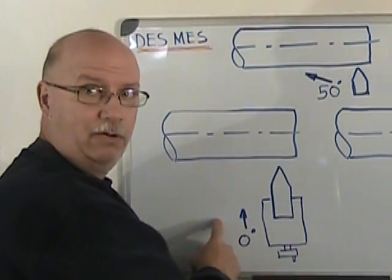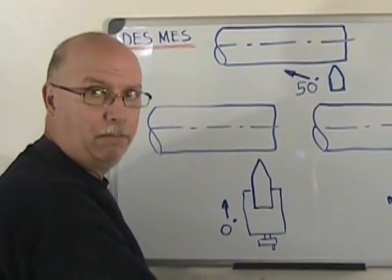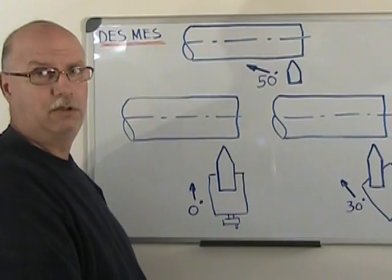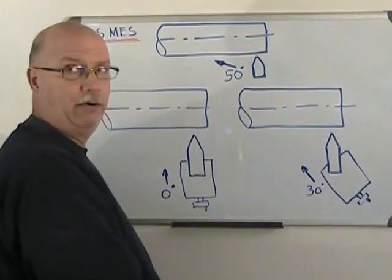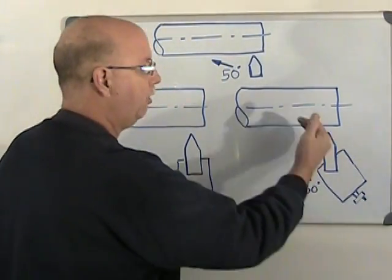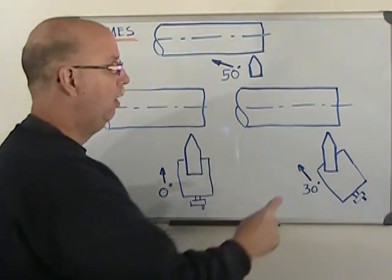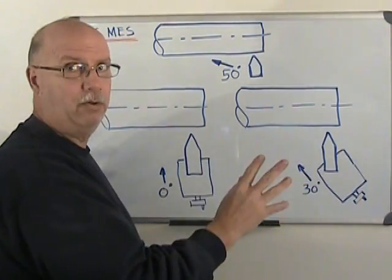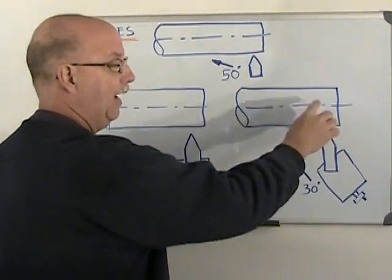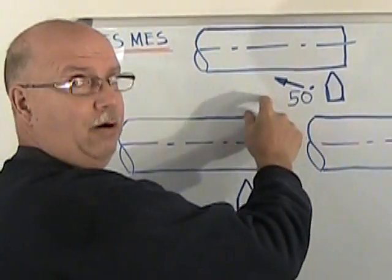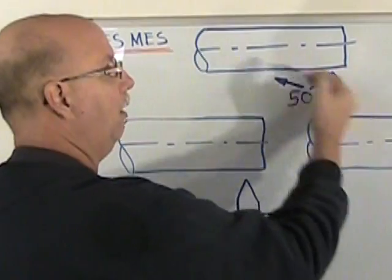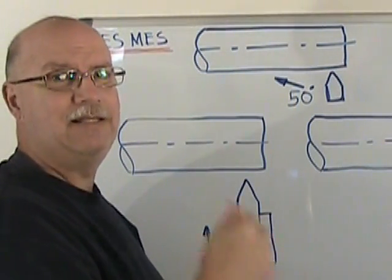At zero degrees the tool is going to plunge straight into the work surface. At 30 degrees the tool is going to come at the work surface at a little bit of an angle, even though the tool itself is always perpendicular to the axis of the part. In the third example the tool is going to be coming at the part at an even steeper angle.